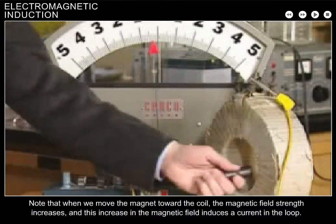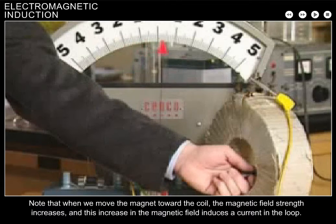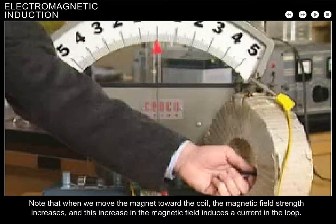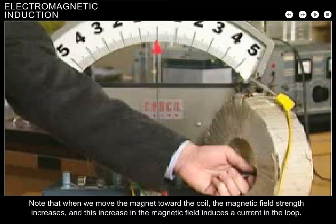Note that when we move the magnet toward the coil, the magnetic field strength increases, and this increase in the magnetic field induces a current in the loop.